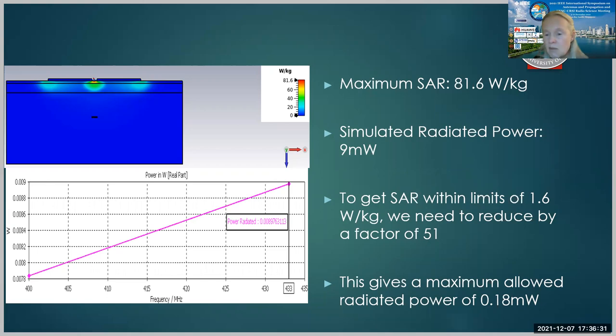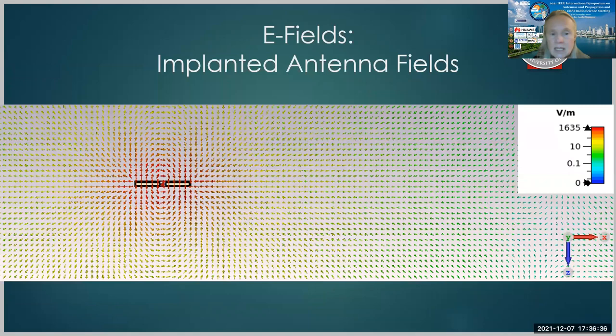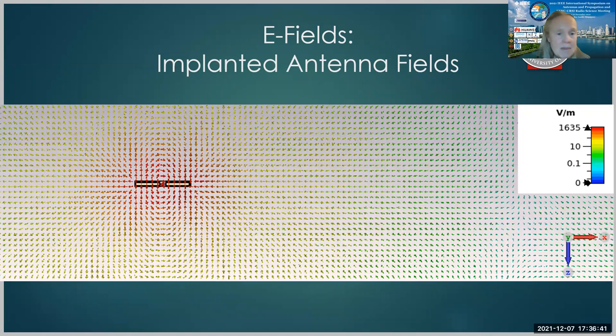Now, here are the fields that we are seeing on the implant, on the internal dipole. And we can see why these are being picked up better because we are matching the polarization better than we did in the case of the loops.